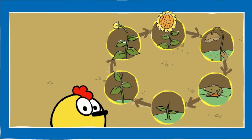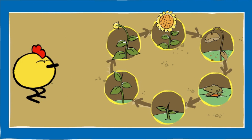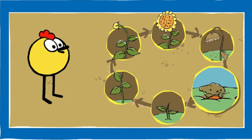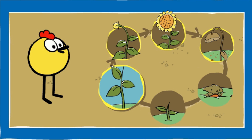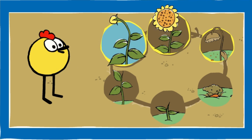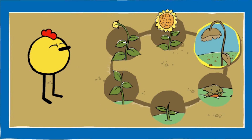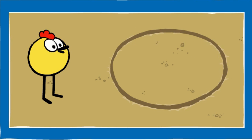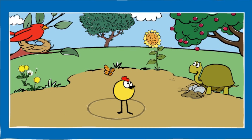Good work! All the pictures are in the right order. This is how a sunflower grows and changes over time. A sunflower seed gets buried in the dirt. With water and sunlight, up sprouts a tiny sunflower plant. The sprout grows into a big plant with leaves. The sunflower plant grows a bud. The bud blossoms into a flower and seeds form. Finally, the seeds fall into the dirt.